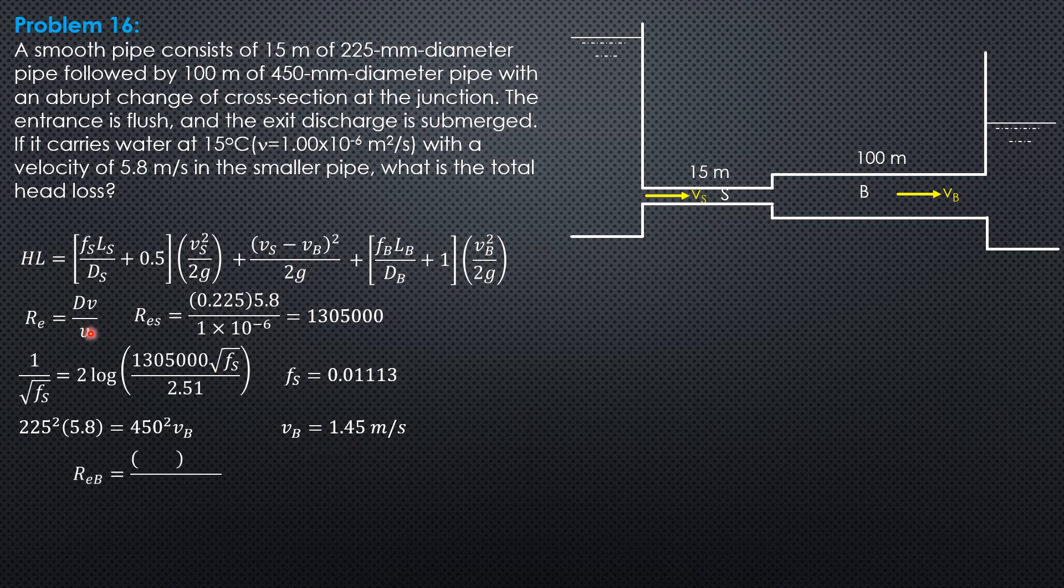Then the Reynolds number in the bigger pipe is diameter 0.45, velocity 1.45, over kinematic viscosity 1 times 10 to the negative 6. So it is 652,500.